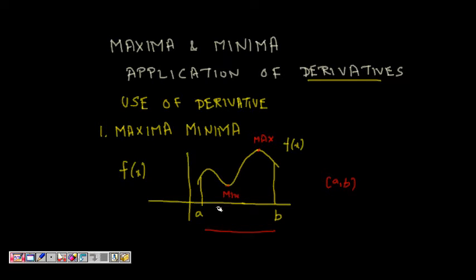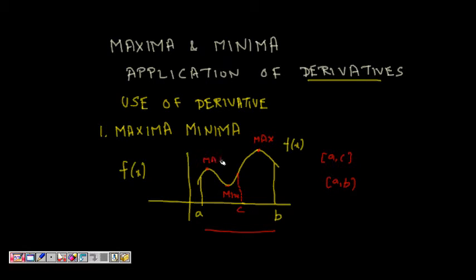For interval [a, b], this is the max and this is the min. But what happens if I have some point c and I ask: in the interval [a, c], what is the maxima and minima? Now the previous maximum is outside this interval, so the max becomes a different point — let's call it max-dash — while the min remains the same.